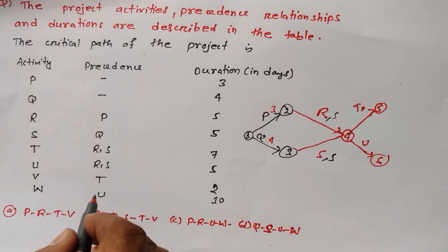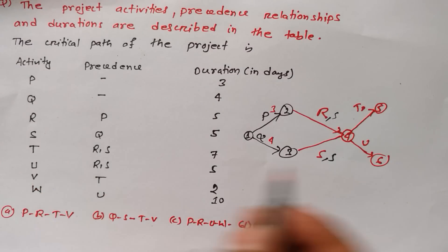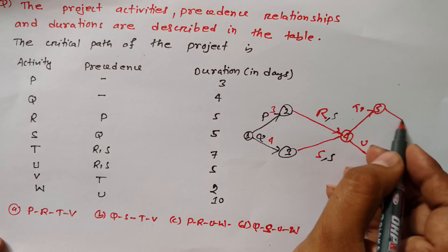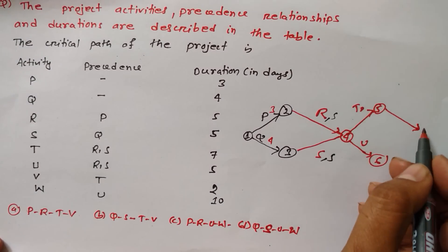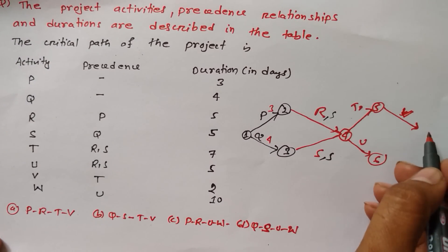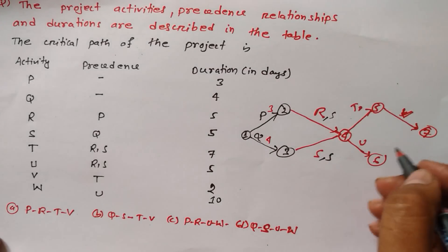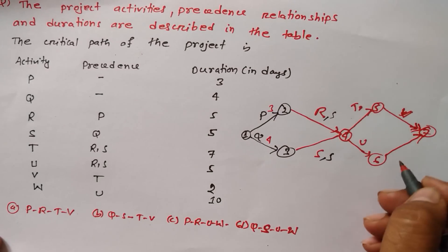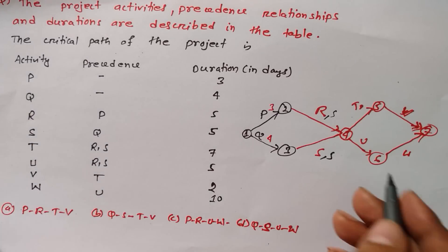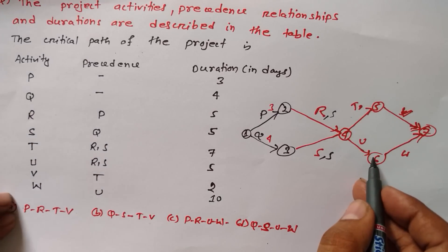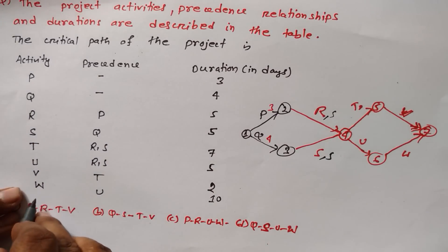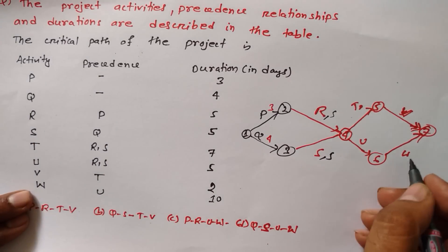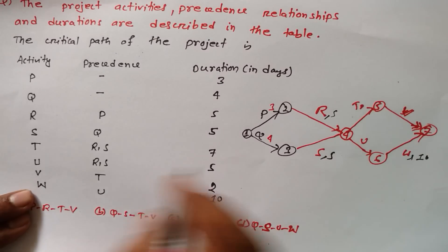Now T and U - T is giving V, suppose this is V, and U is giving W. Let me write time taking for these activities. W is taking 10 days, V is taking 2 days, U is taking 5 days, and T is taking 7 days.